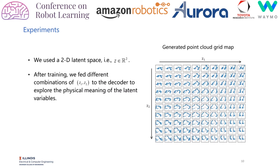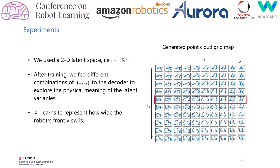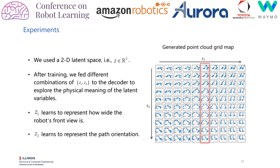The SVAE learns an interpretable latent space. To better visualize the physical meaning of the latent variables, we used a two-dimensional latent space. After training, we fed different combinations of z1 and z2 to the decoder to generate a point cloud grid map. As can be seen, z1 learns to represent how wide the robot's front view is, making the point clouds in front further away as it increases. In contrast, z2 manages to represent the orientation of the crop rows, making the point clouds orient from right to left as it increases.